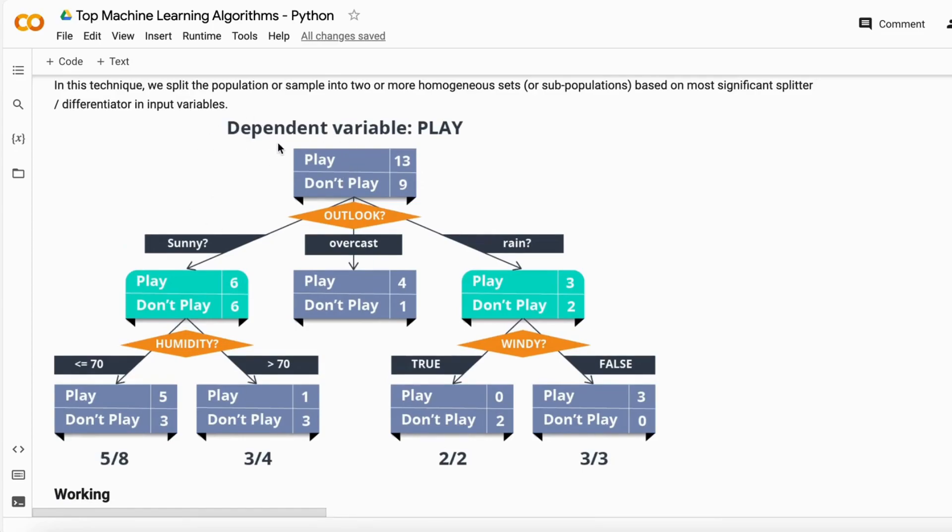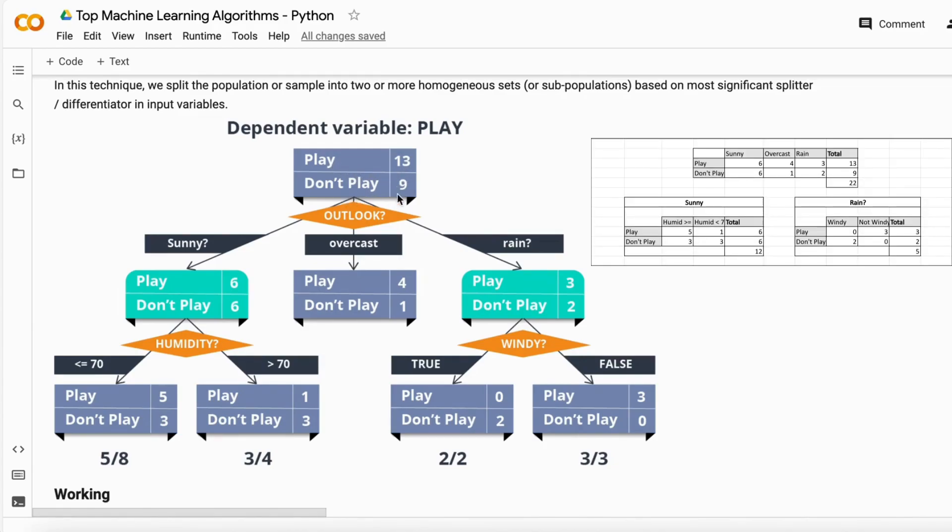So you see on my screen, we have a dependent variable that is play. The play has some kind of labels that it should play or it should not play. So play is 13 count and don't play is 9 count. We have 13 labels of play and 9 labels of not play.